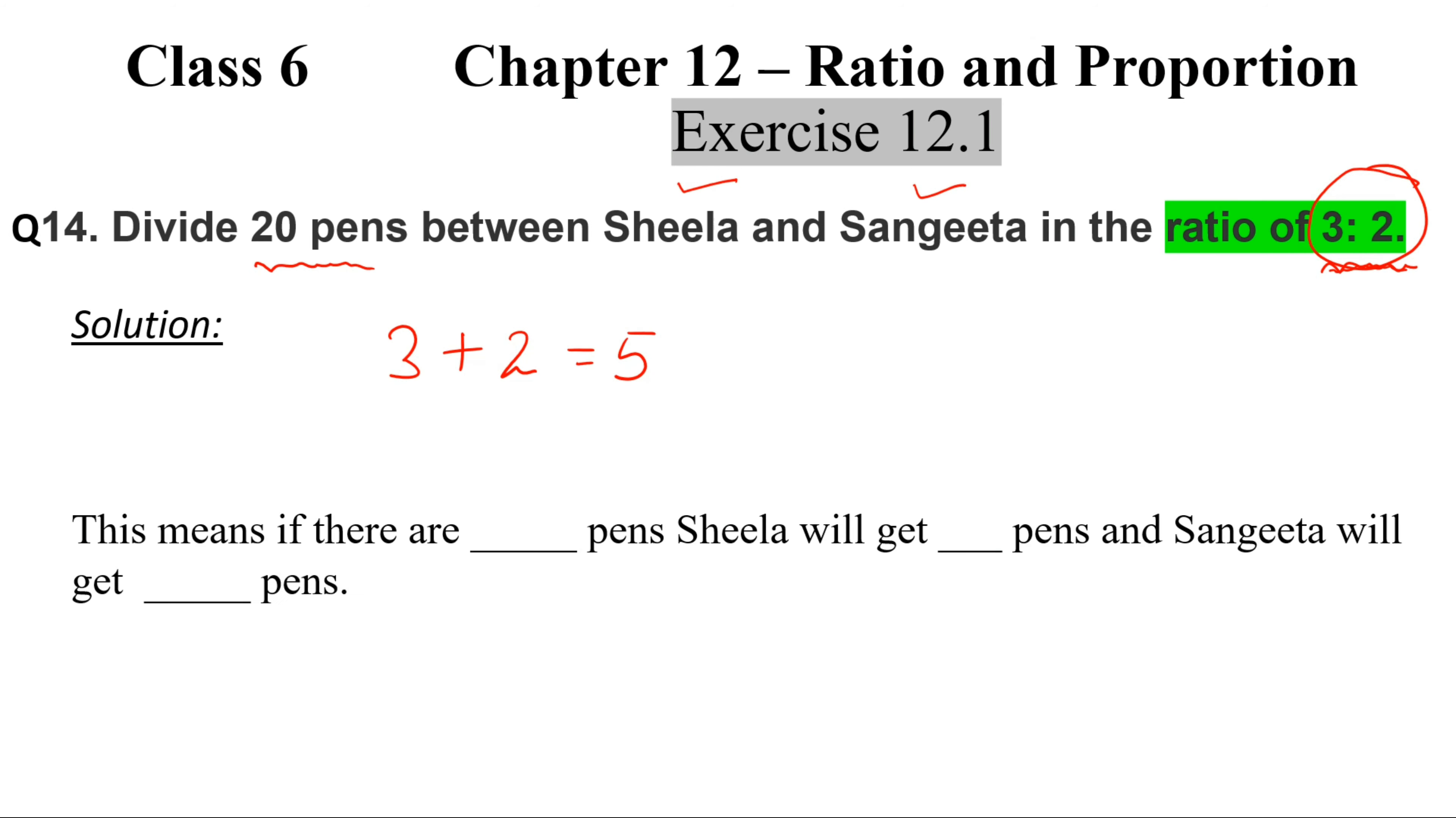What this means is that if there are 5 pens, Sheela will get 3 pens and Sangeeta will get 2 pens.